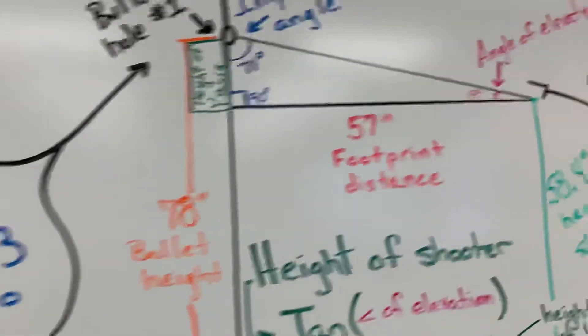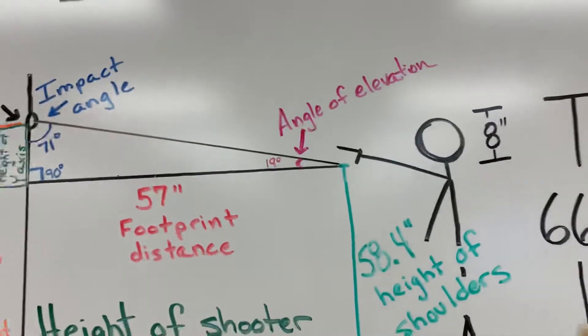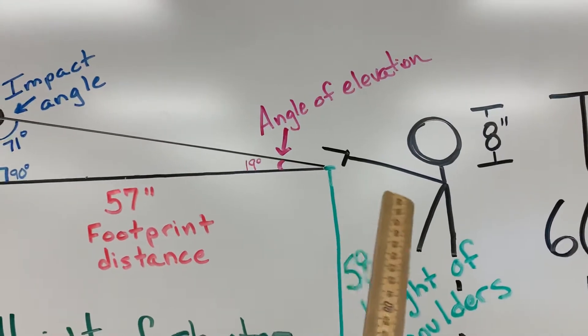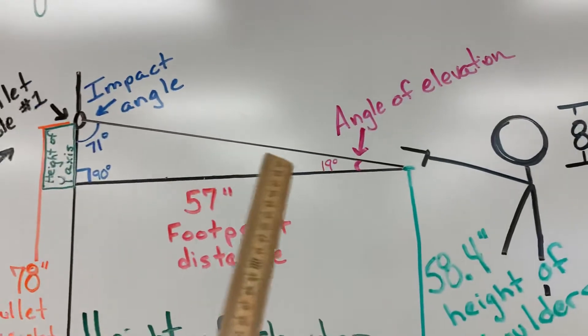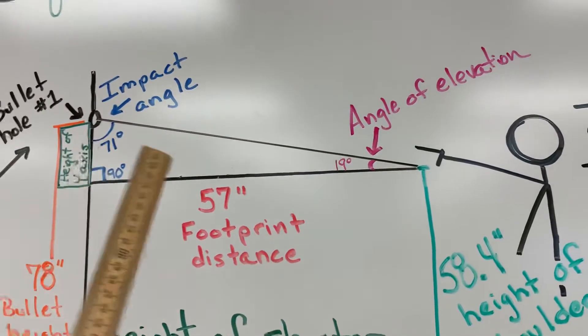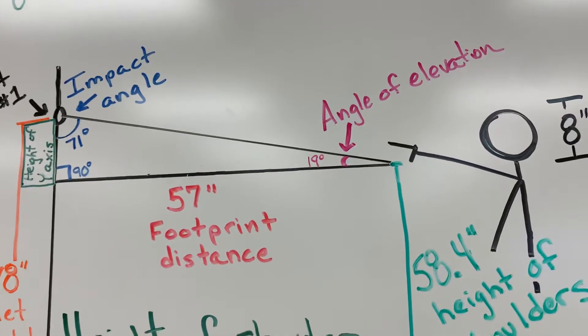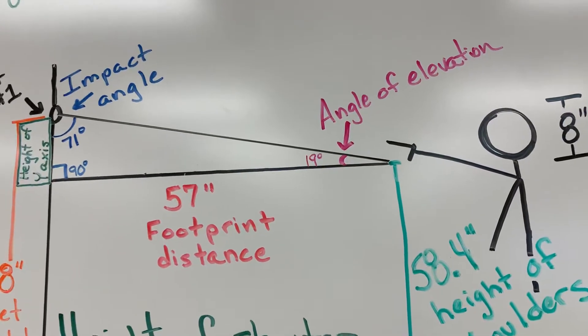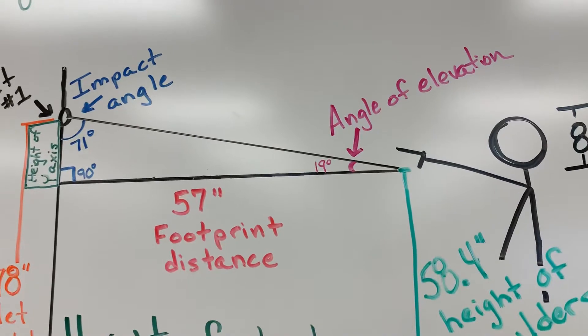Meaning when you look at the shooter, his arm is elevated or her arm is elevated, and that angle that they're shooting at is 19 degrees in relation to the floor. That's the angle of elevation.